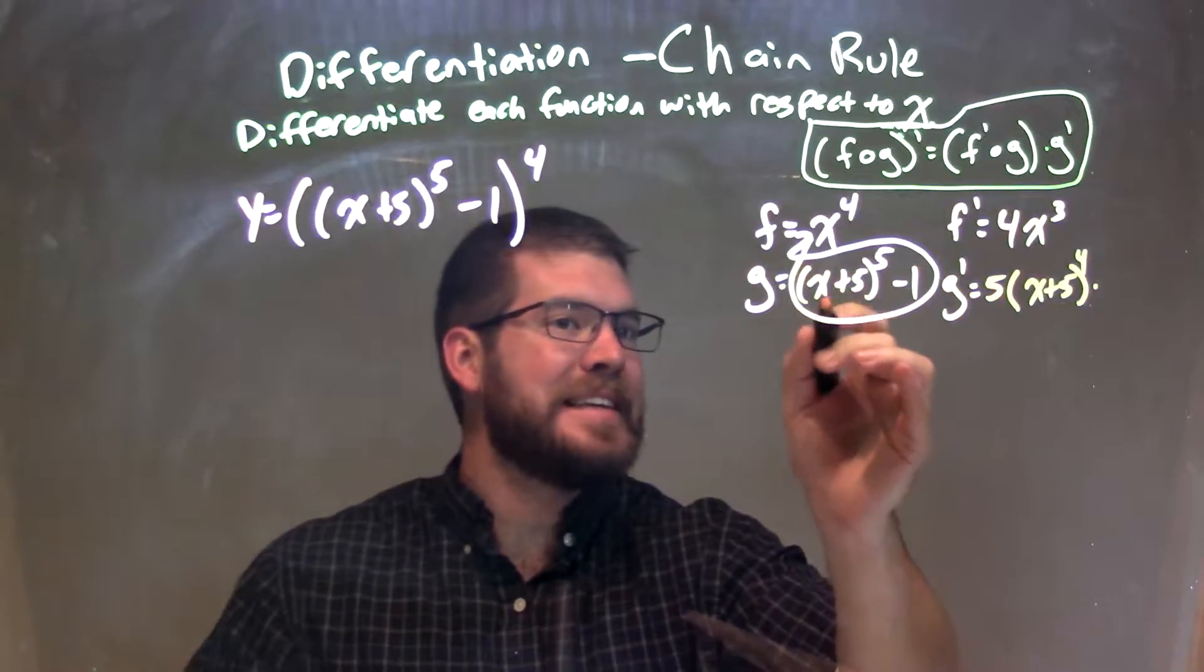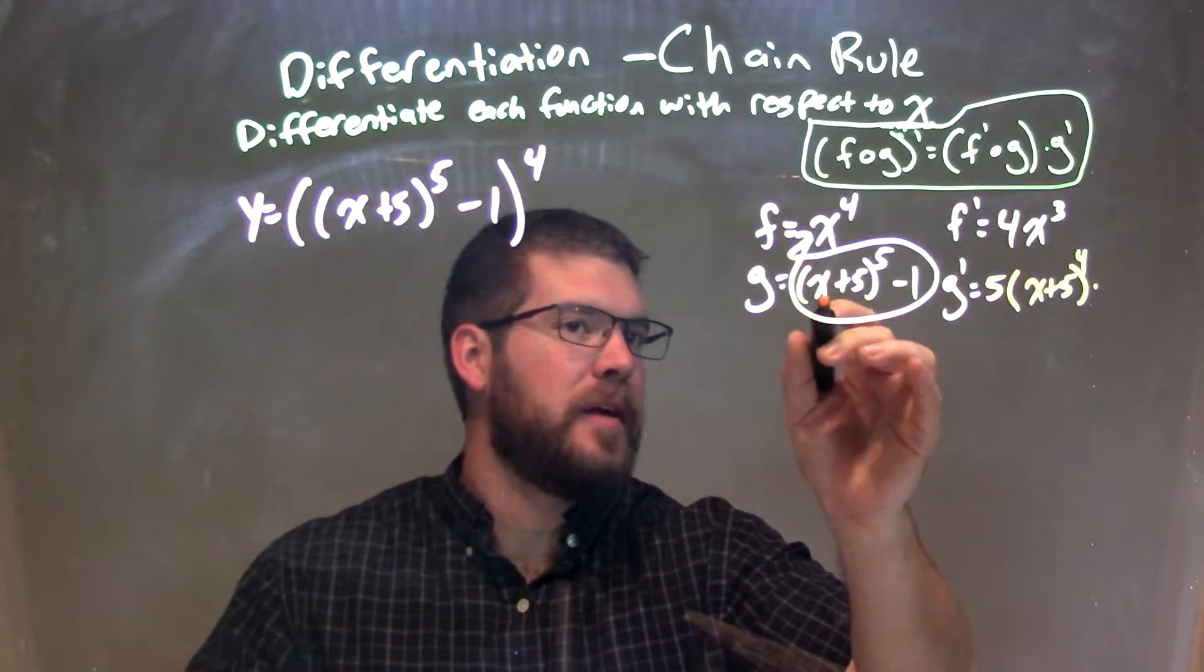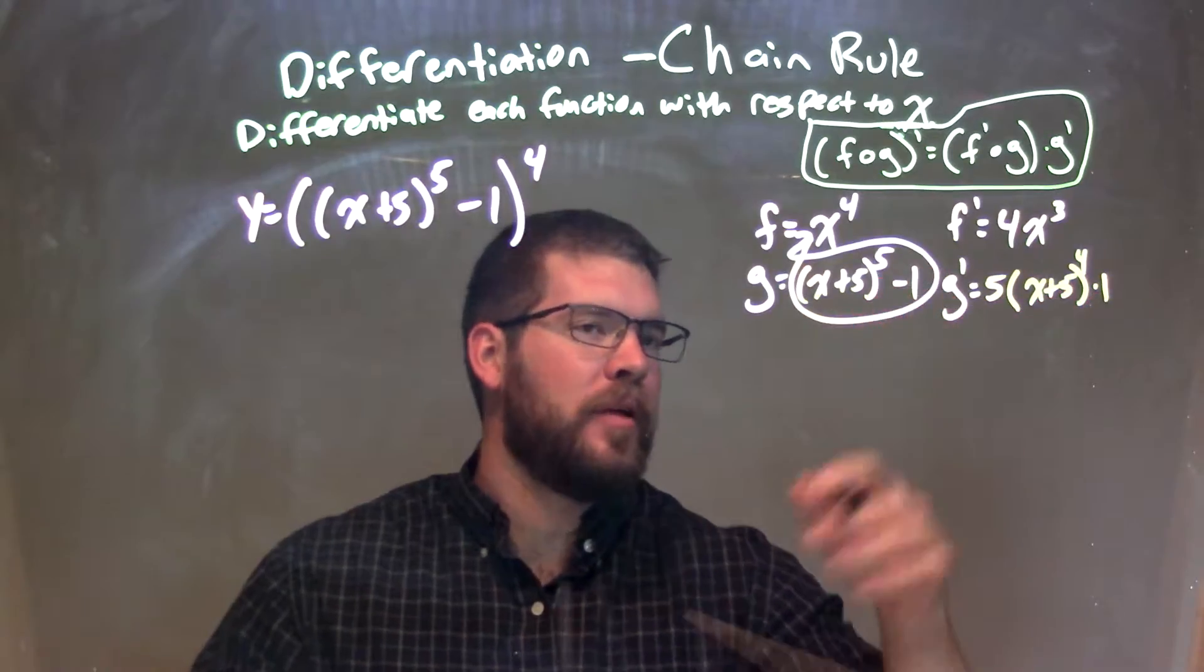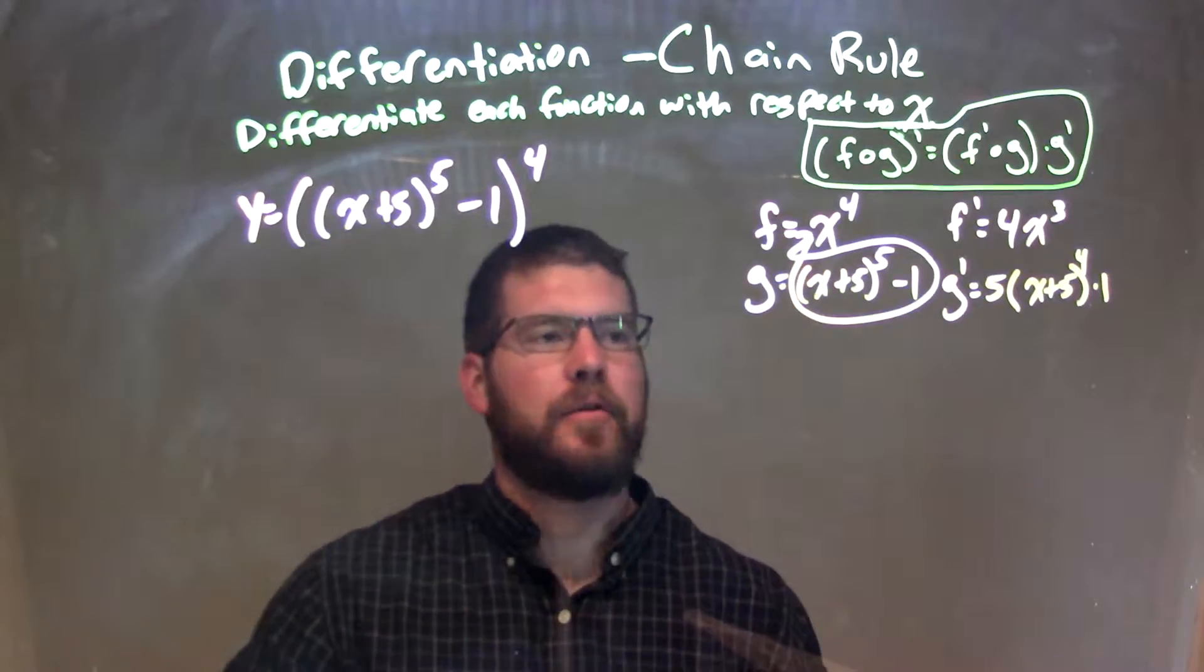And luckily, the derivative of the inside there is just 1. x plus 5, the derivative of that is just 1. And then we don't worry about the minus 1, derivative of that constant is 0. So we have minus 0 there.